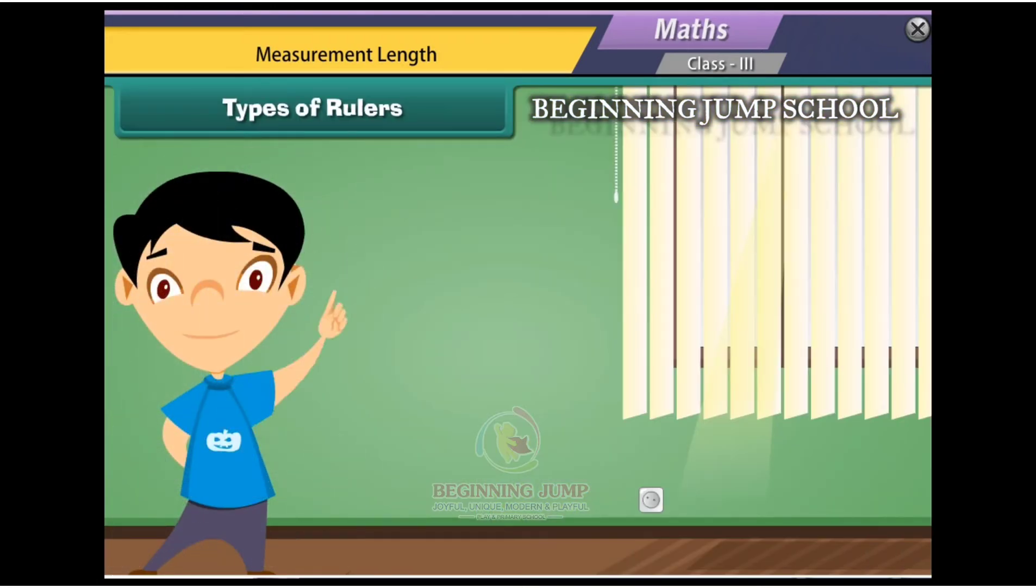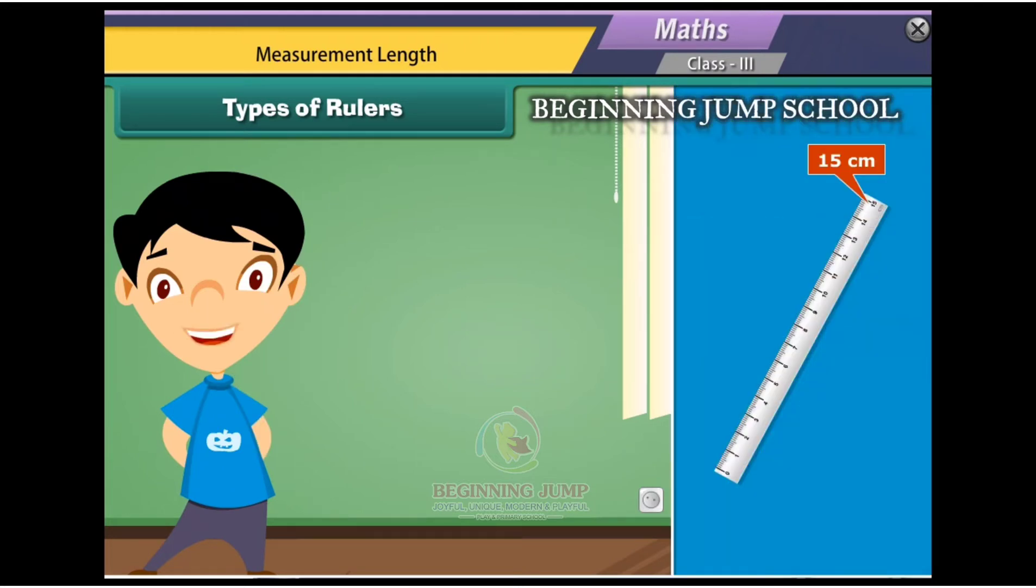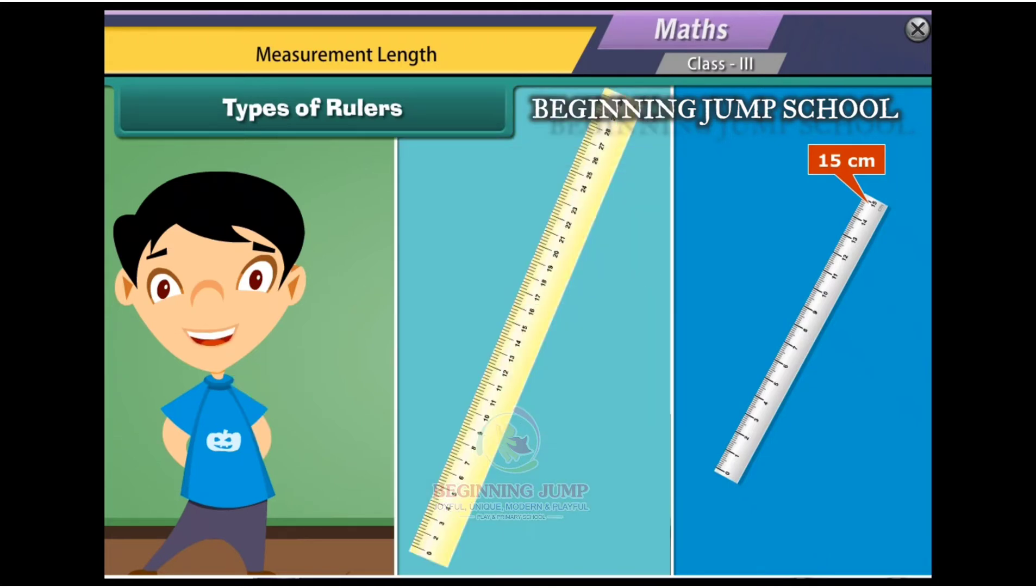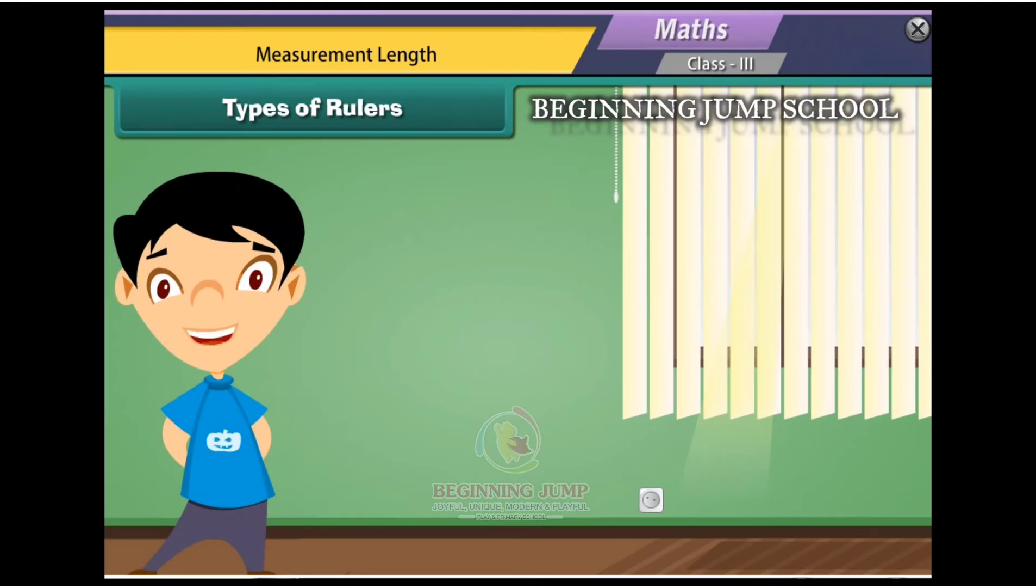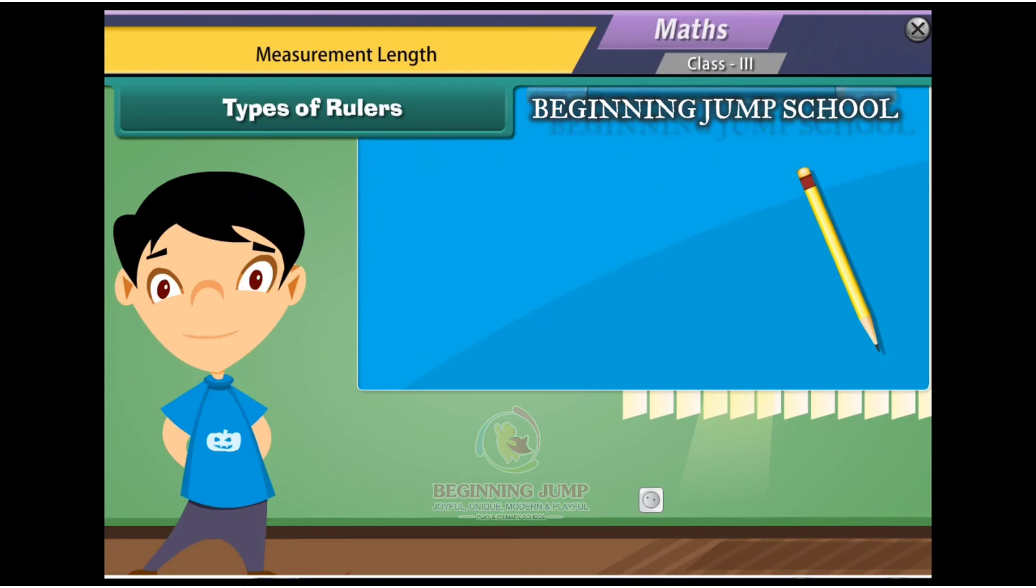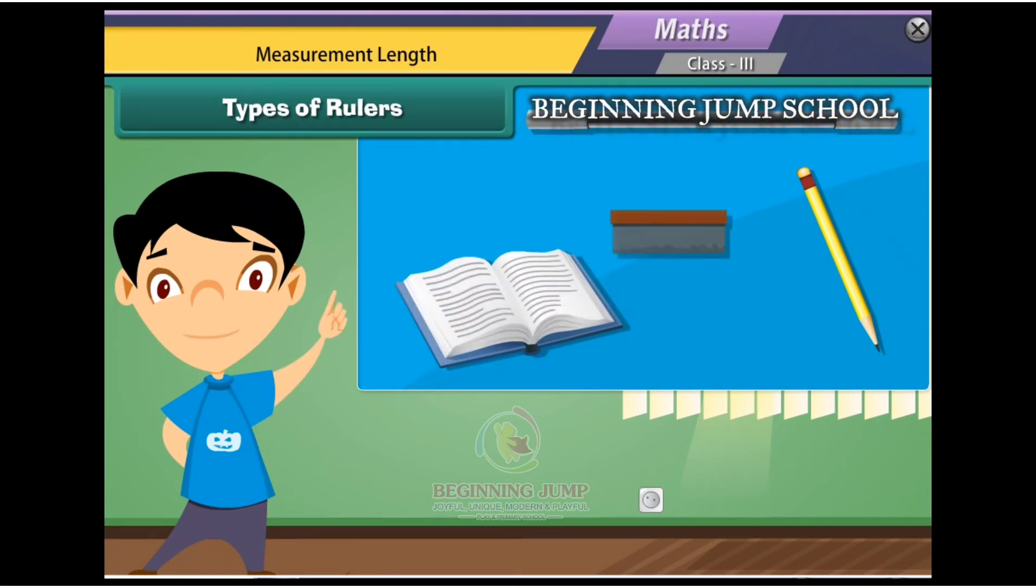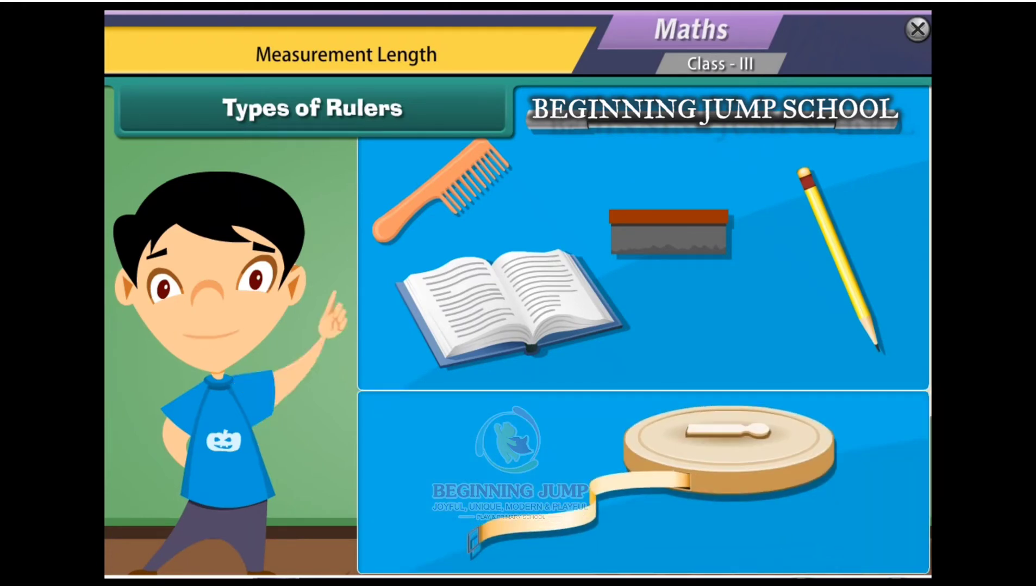A ruler comes in different lengths. The first ruler seen can measure length up to 15 centimeters. The second ruler seen can measure length up to 30 centimeters. But a ruler cannot measure all objects. Ruler is used to measure only short length objects such as pencil, stick, notebook, duster, comb, etc. A measuring tape is used to measure long things.